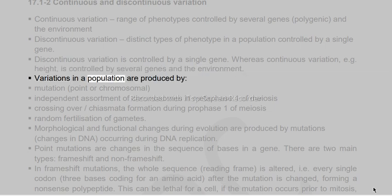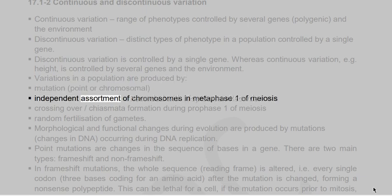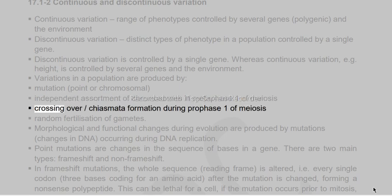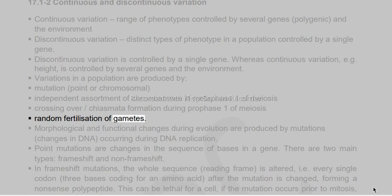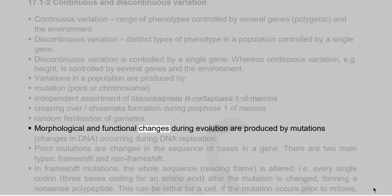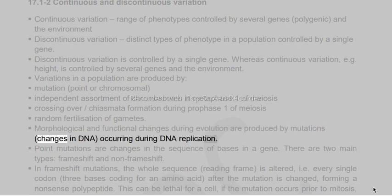Variations in a population are produced by mutation (point or chromosomal), independent assortment of chromosomes in metaphase I of meiosis, crossing over and chiasma formation during prophase I of meiosis, and random fertilization of gametes. Morphological and functional changes during evolution are produced by mutations, changes in DNA occurring during DNA replication.